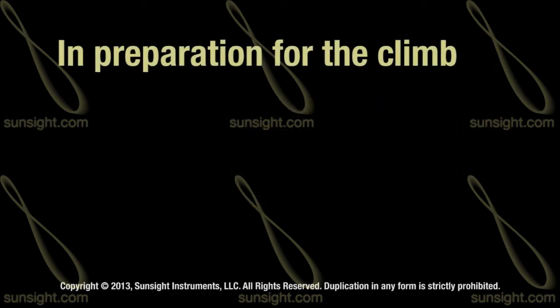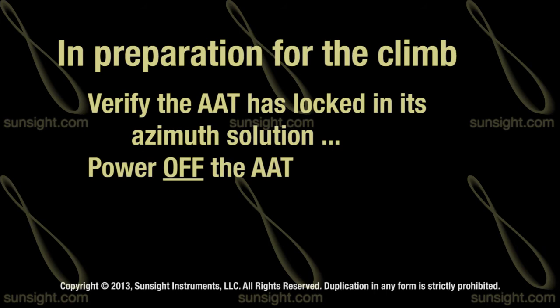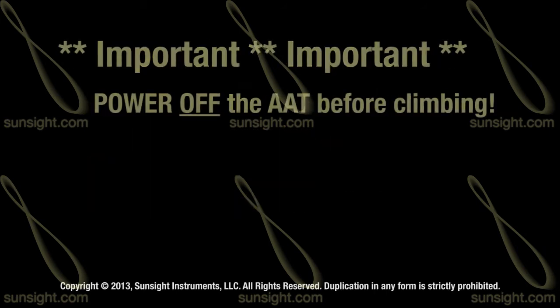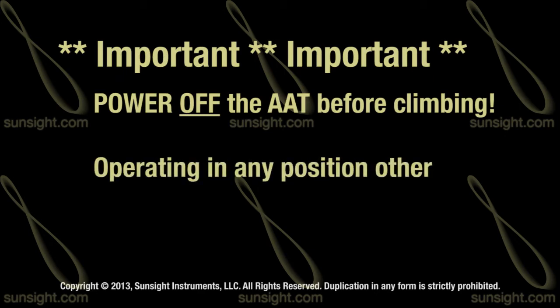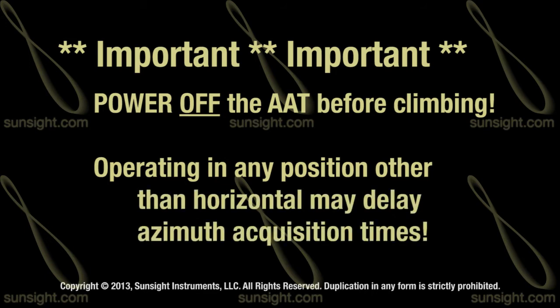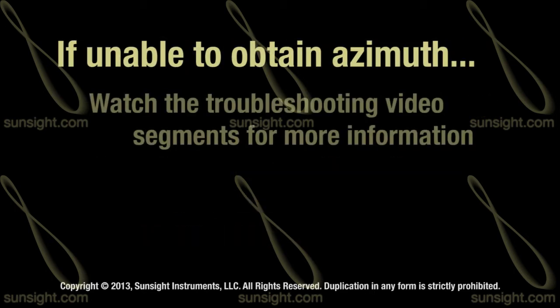When you are ready to climb, verify that the AAT has locked in its azimuth solution. After you have verified the solution, power off the AAT and proceed to climb the tower. Be sure to power off the AAT before climbing. Operating the AAT unit in any position other than horizontal may delay azimuth acquisition times. If the azimuth solution is not locked in, see the troubleshooting segments to determine the steps needed to ensure proper azimuth before climbing.